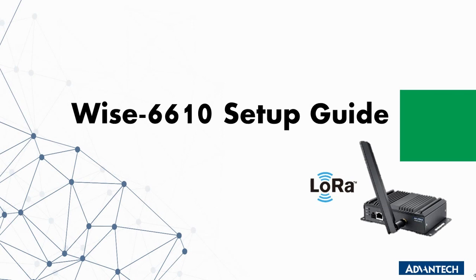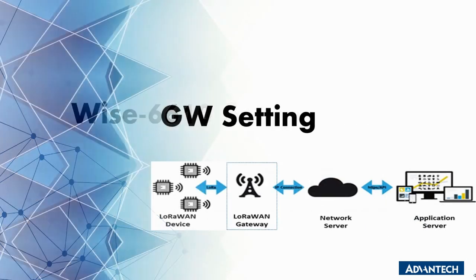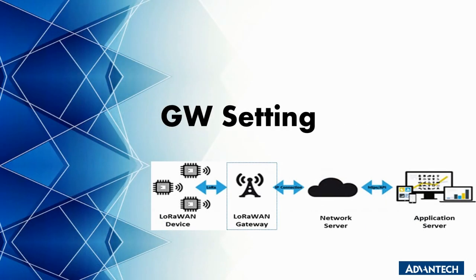For the second section, we'll show you how to configure our LoRaWAN gateway. Before we start, it's important to understand the data flow and how data is processed on the gateway. First, the LoRaWAN gateway receives data from the LoRaWAN node. Then it processes the data using its network server function, which decrypts the data received from the LoRaWAN node. After decryption, the network server sends the data to the application server. All of these functions can be completed on our Y6610 LoRaWAN gateway.